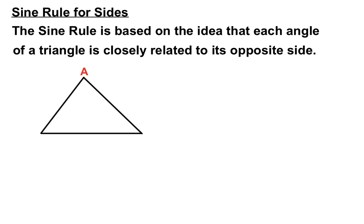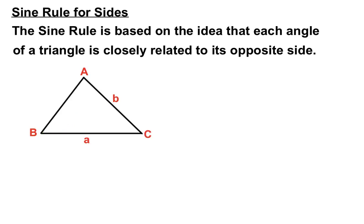Here we have a triangle with a point A, and opposite that we always name the side lowercase a. The angles are named with uppercase letters and the opposite sides are named with lowercase letters. So opposite angle B will be a lowercase b, and opposite angle C is a lowercase c.